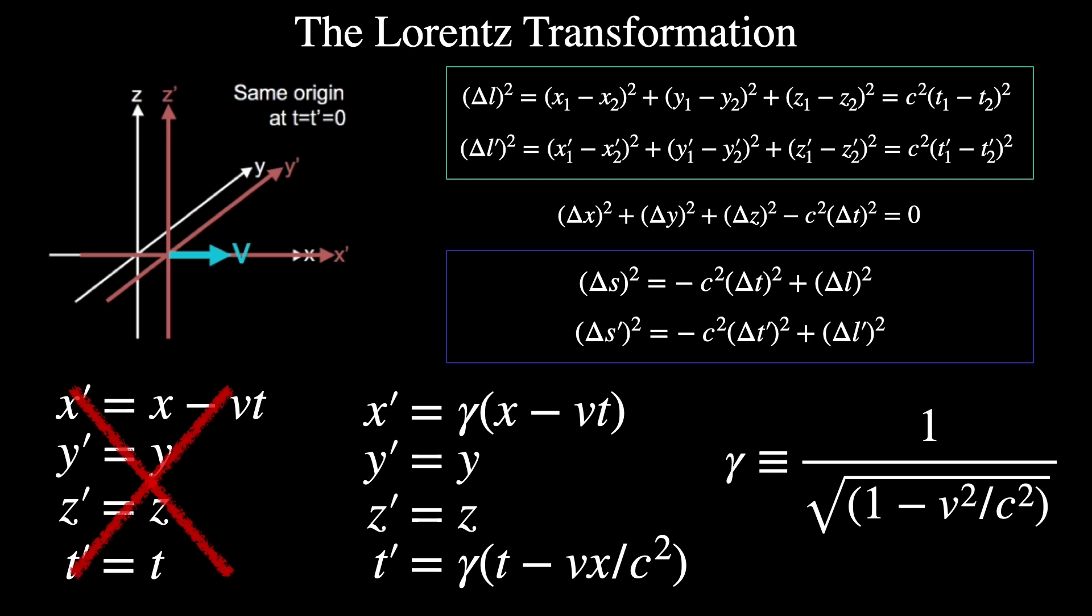Again, transforming to a time coordinate in prime, in the prime coordinate system, depends both on the unprime time and the position in unprime. Time and space are interlinked. It means they're really one and the same thing-ish. They're both parts of some broader thing called spacetime.